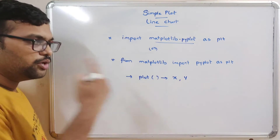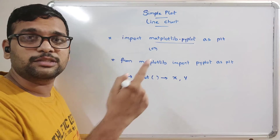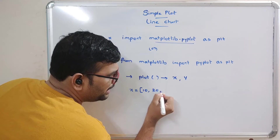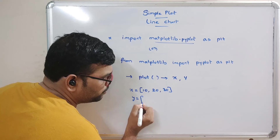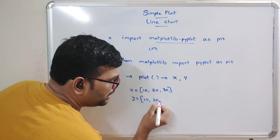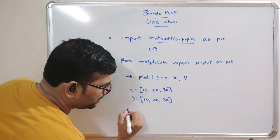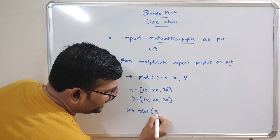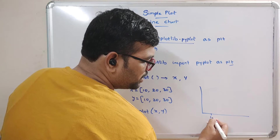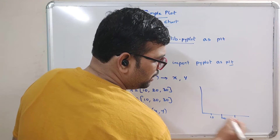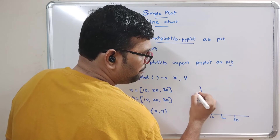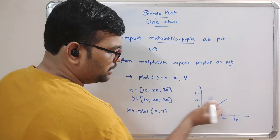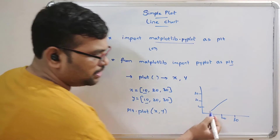The plot function takes parameters x and y — the x-axis and y-axis values. You can also give an expression for y. For example, if x equals [10, 20, 30] and y equals [10, 20, 30], then plt.plot(x, y) creates a graph. The points will be at (10,10), (20,20), and (30,30), forming a line.